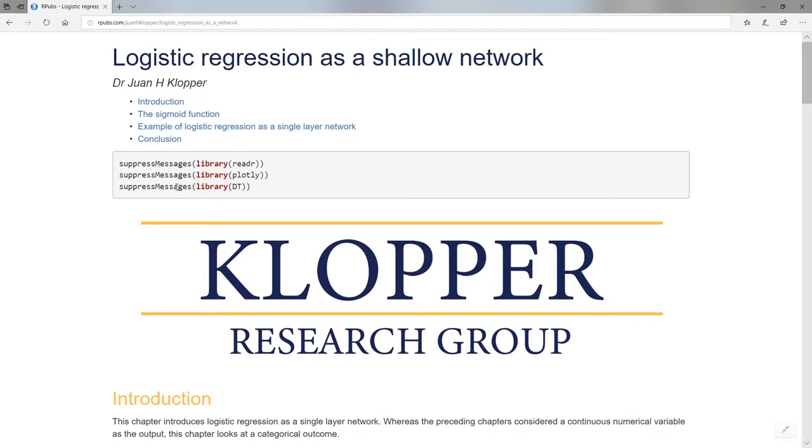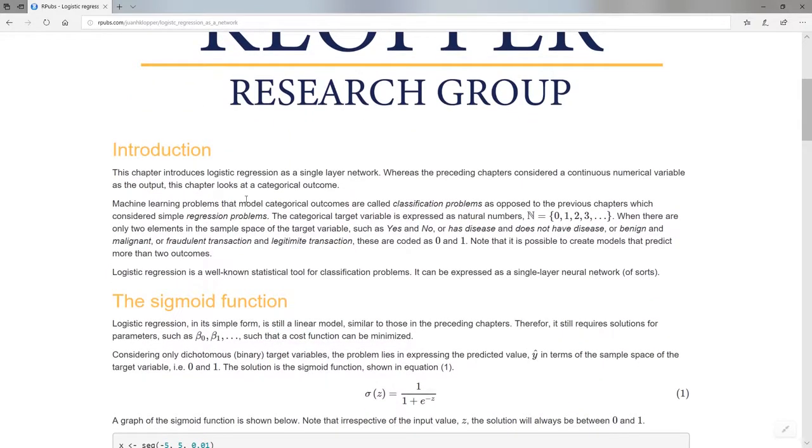Don't worry about the coding, you will definitely pick it up as we go. This is the document on our pubs you can read if you don't want to watch this video. What we have here at the top is a categorical target variable, and we can express this as zero, one, zero, one, and two depending on how many elements there are in the sample space. If we have a binary outcome like yes or no, we're just going to use zero and one.